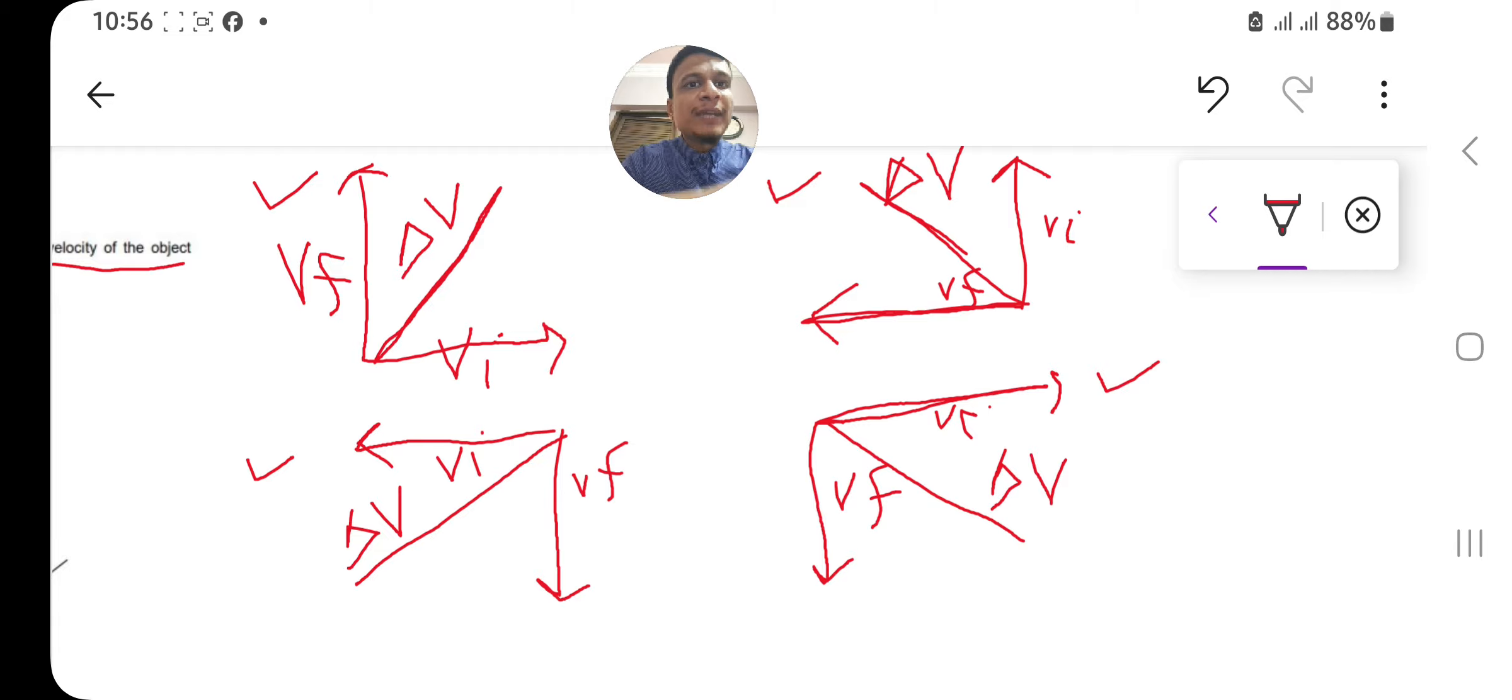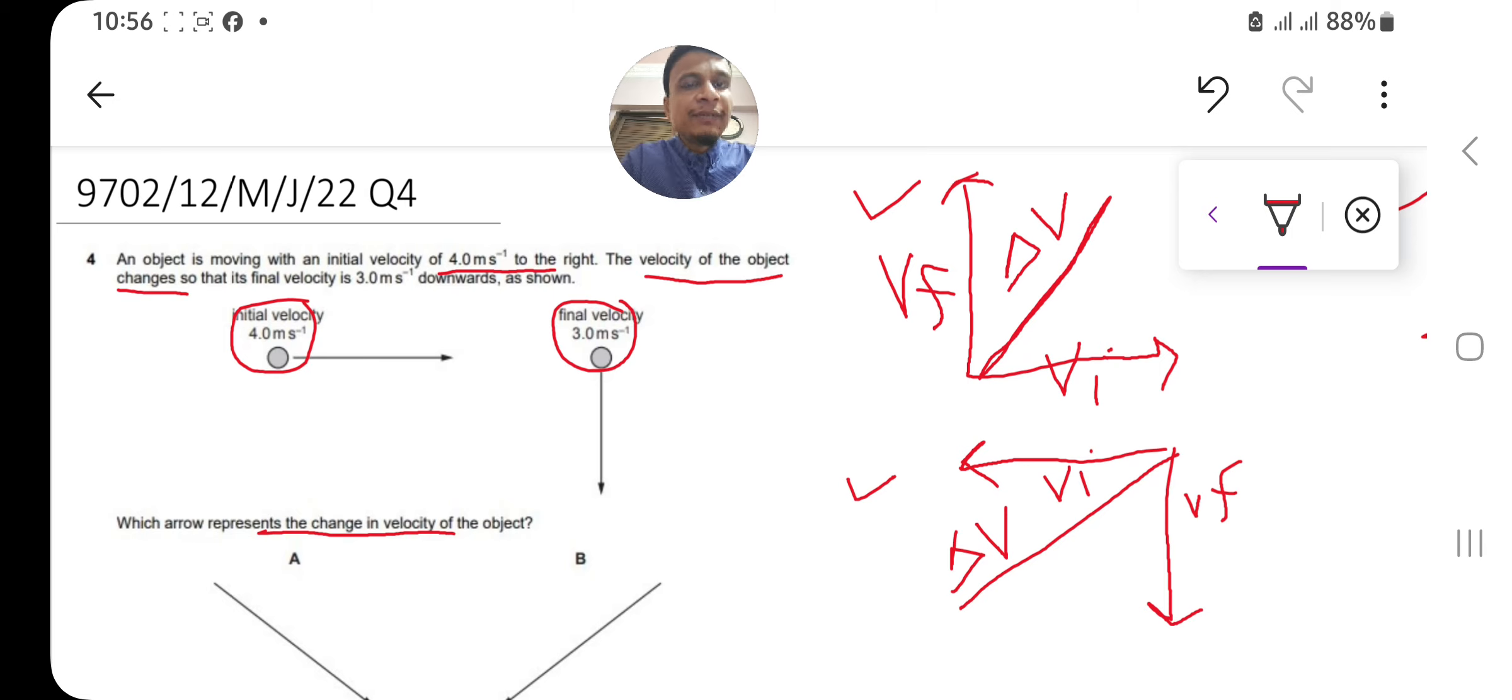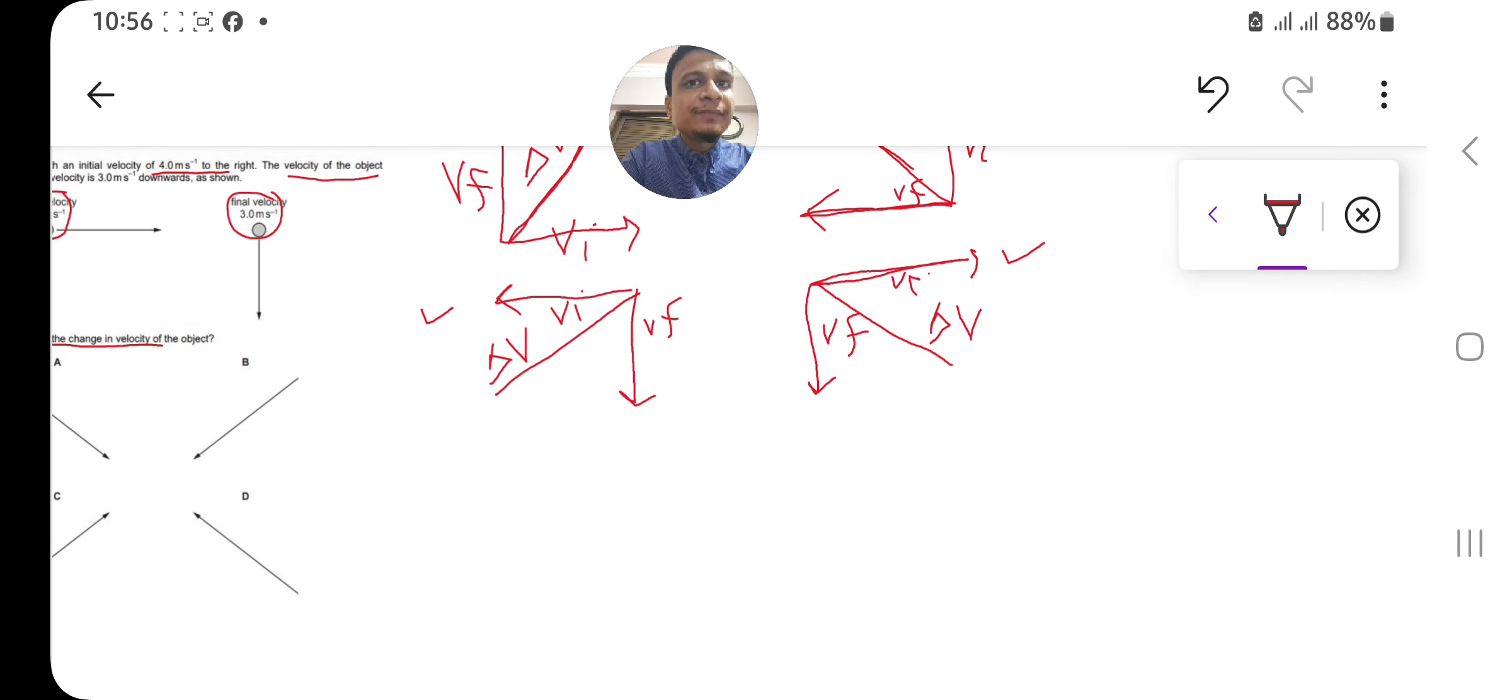that it is given that Vi is to the right and Vf is downward. But we know that